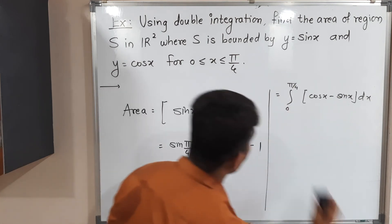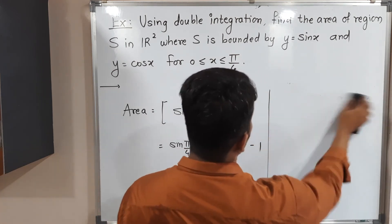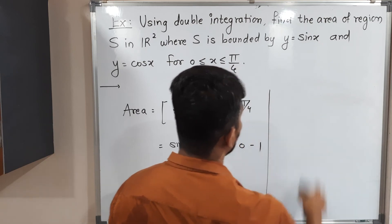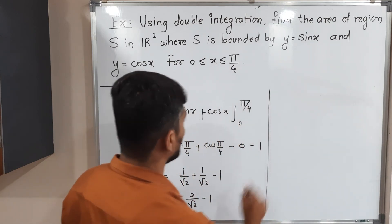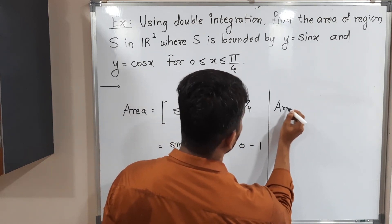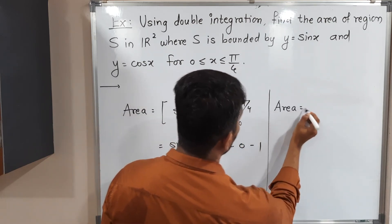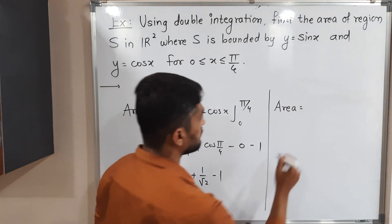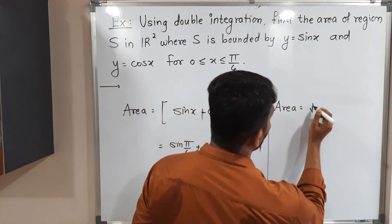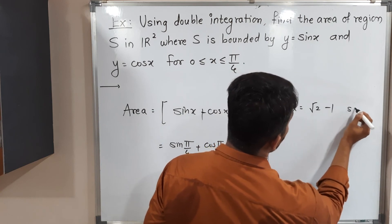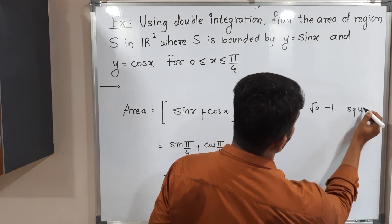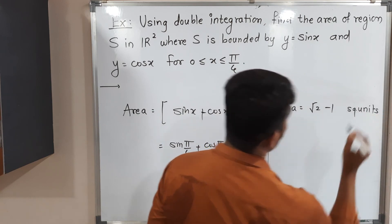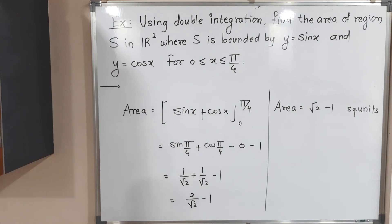Therefore, area = 2/√2 − 1 = √2 − 1, since 2/√2 simplifies to √2. So the required answer is (√2 − 1) square units. Make a screenshot of it. Thank you.